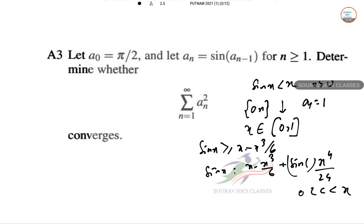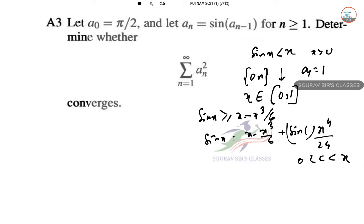Now we can claim that a_n ≥ 1/√n for all n ≥ 1. It follows that summation of a_n² diverges since summation of 1/n is divergent.